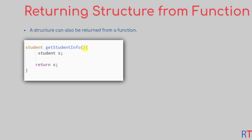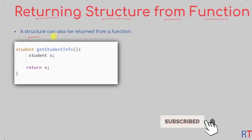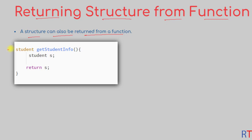In this video we're going to see how we can return one structure from a function. Like any other data type, a structure can also be returned from a function. In the function declaration, the return type of the function has to be the structure type, and then we can use the return keyword to return a variable of that structure type.